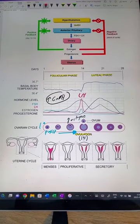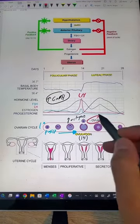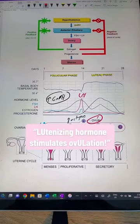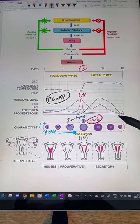That's the triggering of ovulation, where the mature follicle is released as an ovum or oocyte. Remember, luteinizing hormone stimulates ovulation. After day 14 of ovulation, the hormones start to drop off.